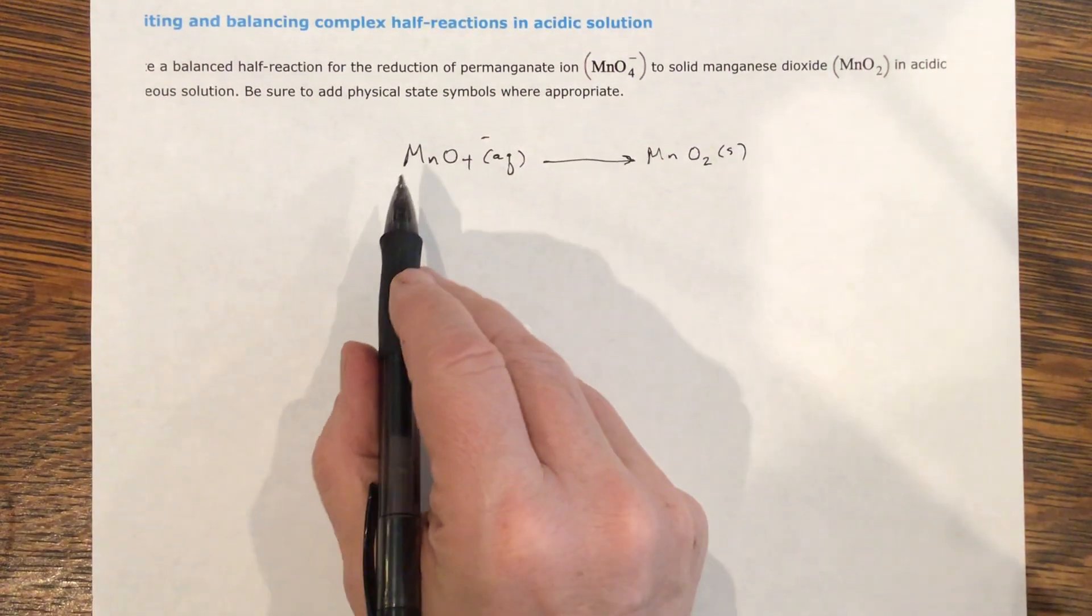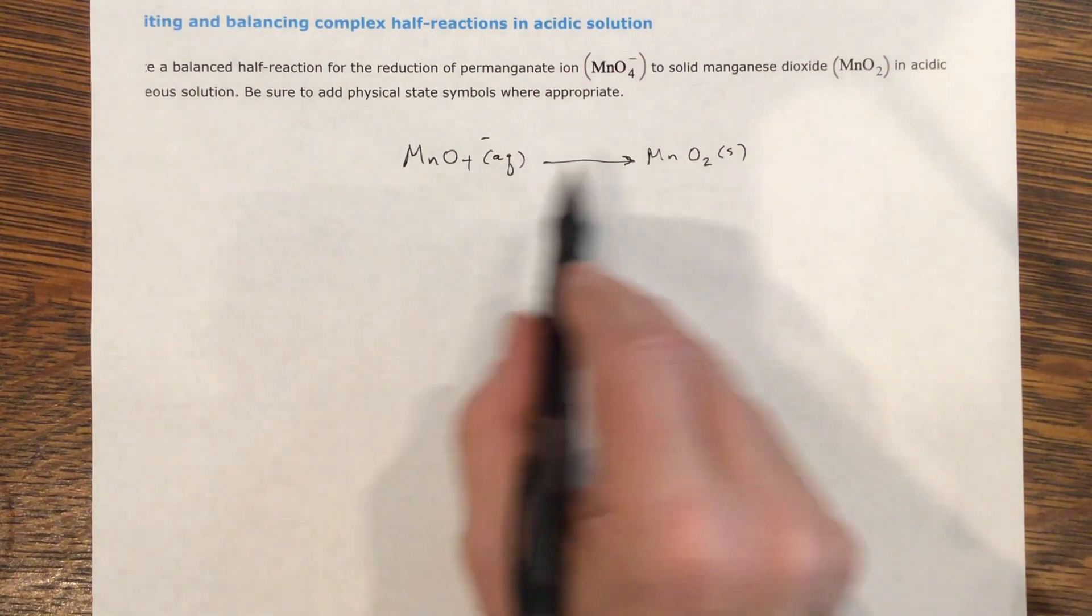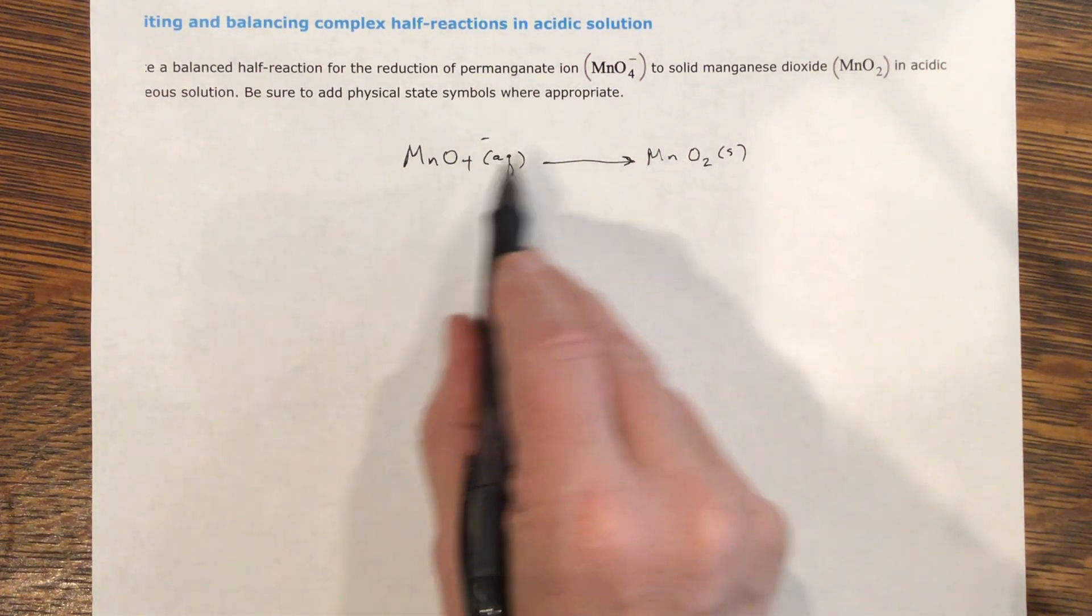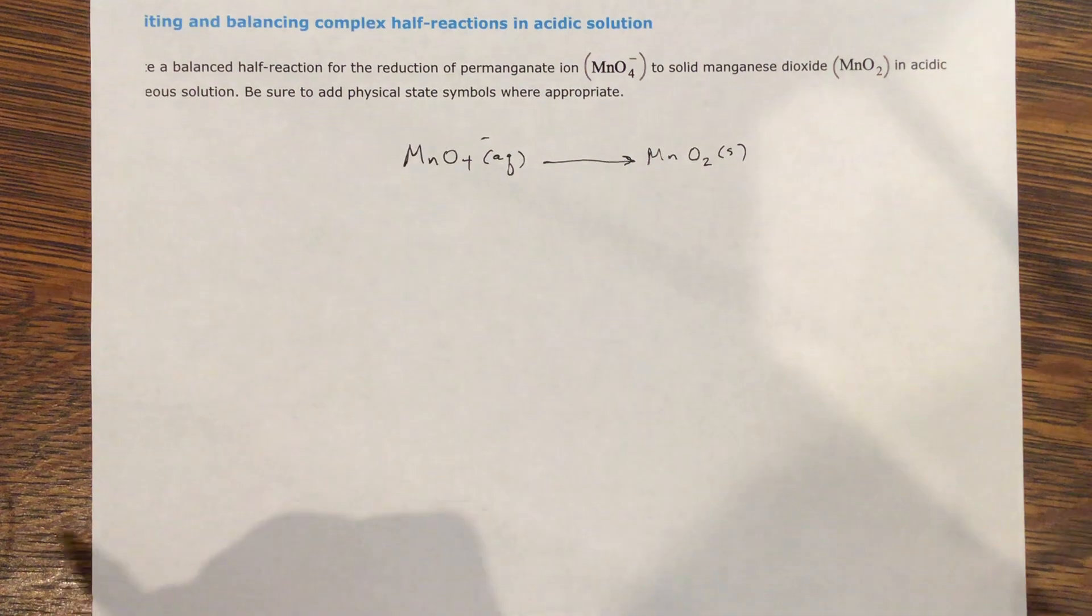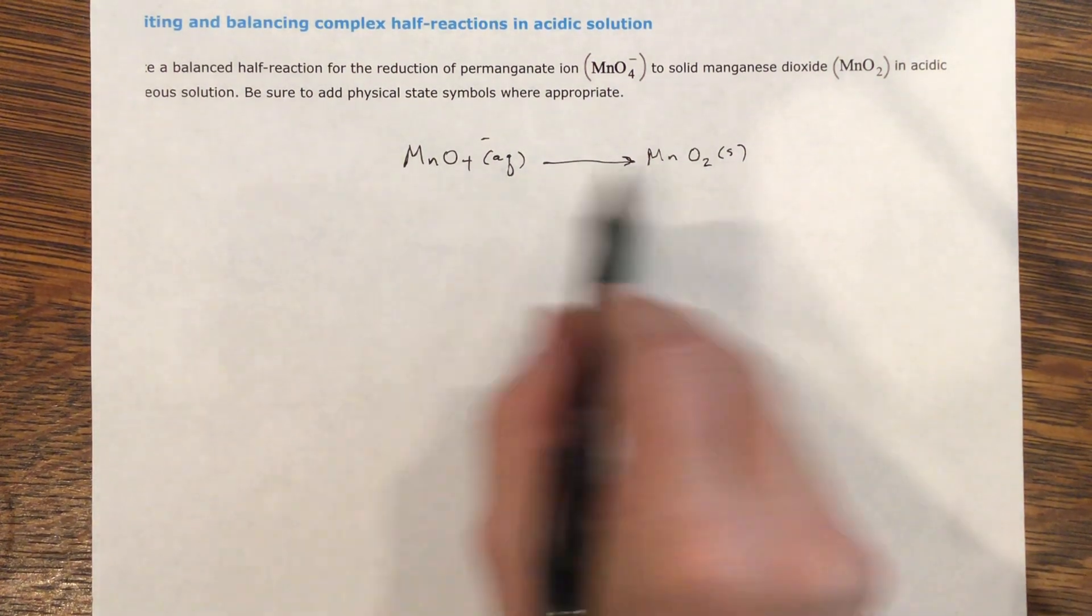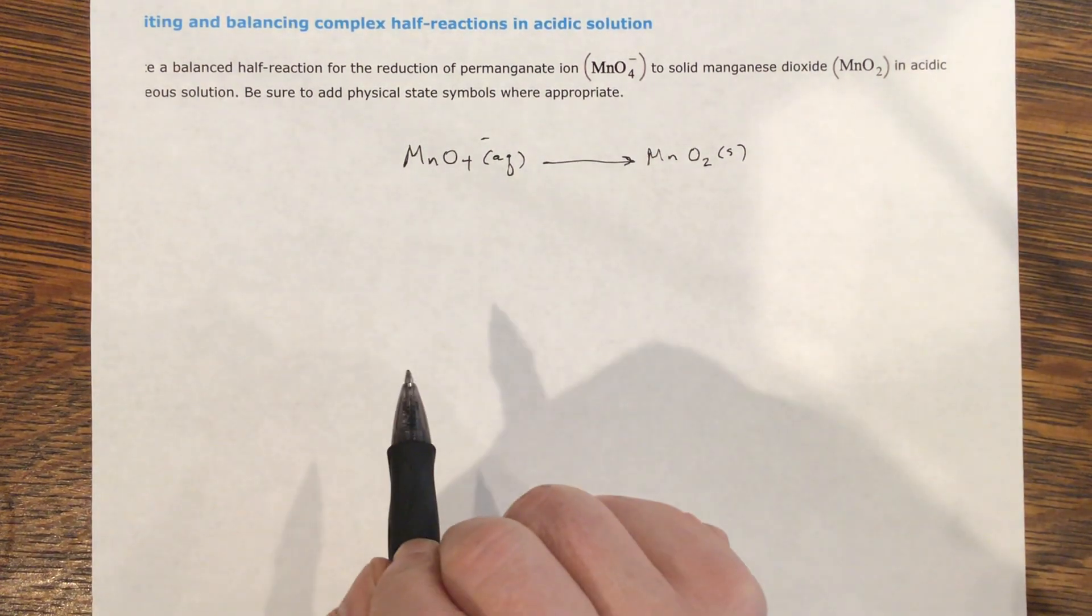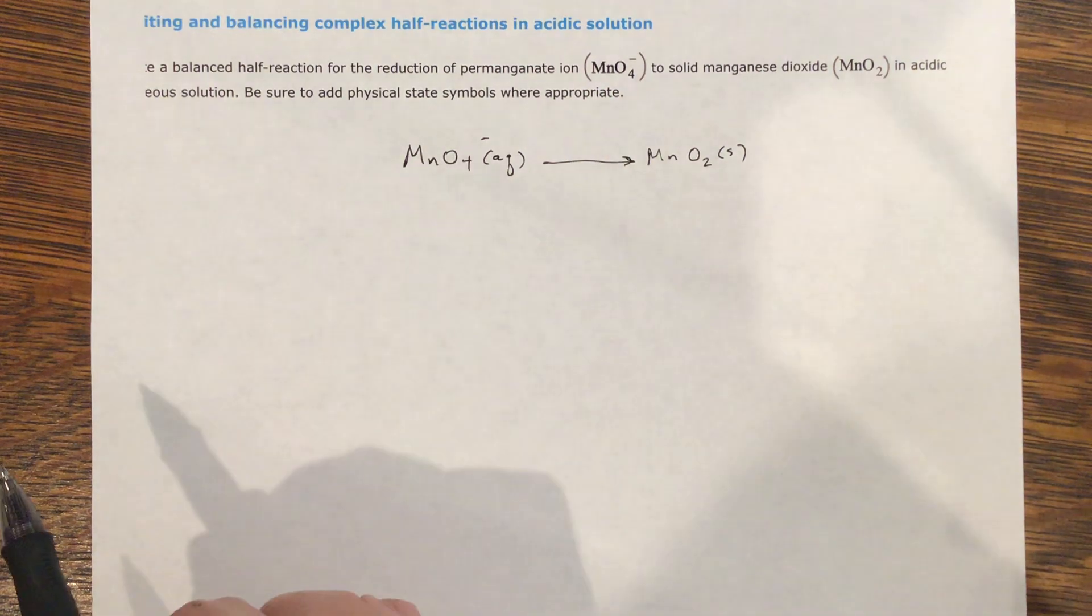The first thing I'm going to do is anything that's not hydrogen or oxygen, I'm going to balance. And this is already balanced. I've got a one-to-one, so I check that first. I would balance it if I needed to right there. I'd put a one or a two or a five or whatever it is.